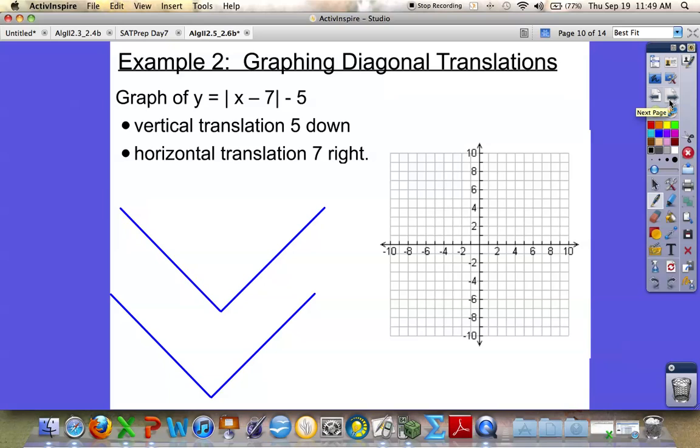Now what we're going to do is both translations. We're going to move both left, right, and up, down. So what I want to do is put my parent function on the origin. Remember, your parent function is what you get if you take out the h's and the k's. So we're back to the absolute value of x. So there's your parent function.